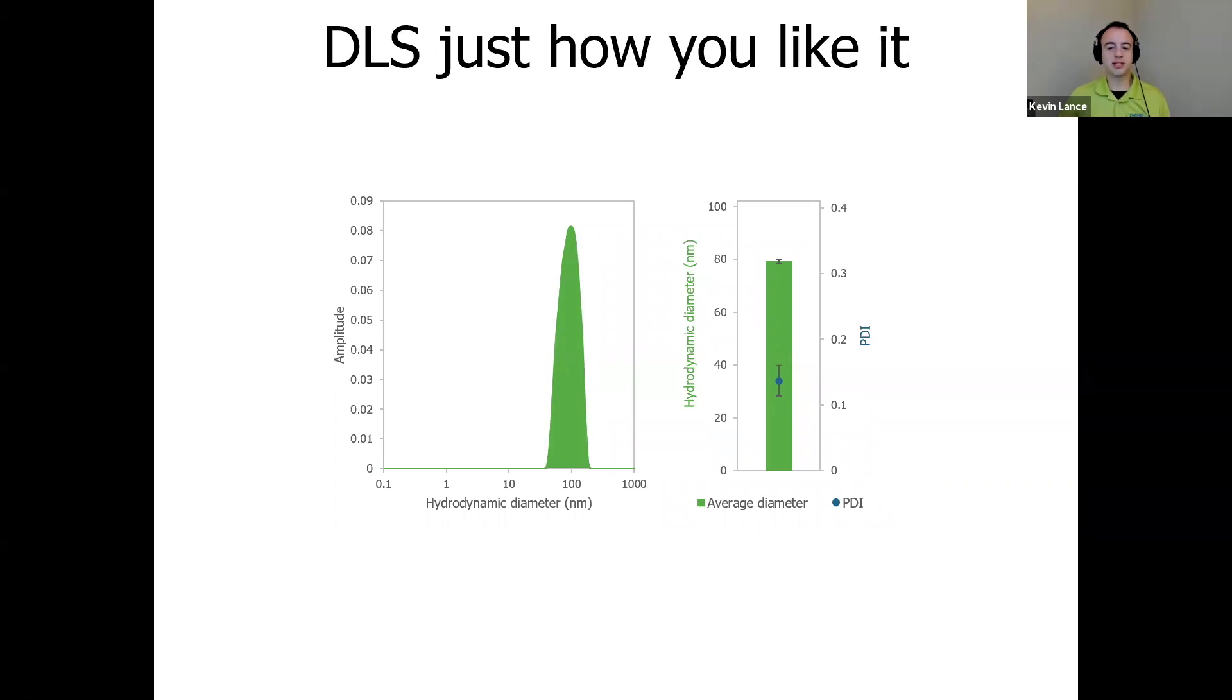So all this DLS data is just how you like it, delivering up quick intensity and mass distributions, hydrodynamic diameter and PDI values, but now you can add the throughput that lets you get a really great understanding of the precision you have in your sample. So you don't need to stick to an n of one for your DLS data anymore. You can actually run triplicates, quadruplicates, duplicates, you name it.